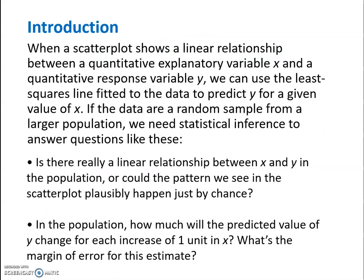When a scatter plot shows a linear relationship between a quantitative explanatory variable x and a quantitative response variable y, we can use the least squares line fitted to the data to predict y for a given value of x. If the data are a random sample from a larger population, we're going to need statistical inference to answer questions like: Is there really a linear relationship between x and y in the population, or could the pattern we see plausibly just have happened by chance alone?